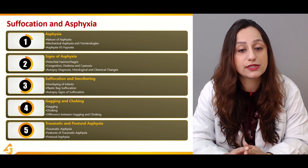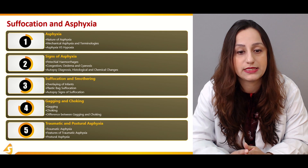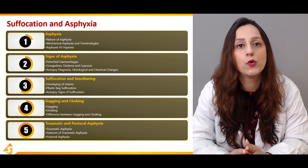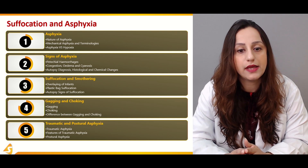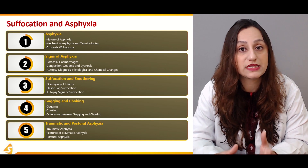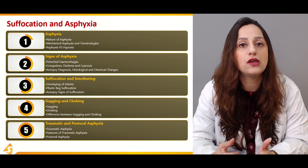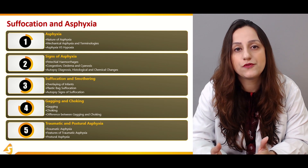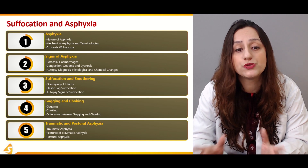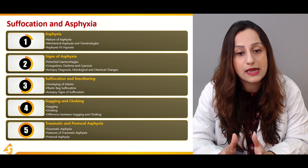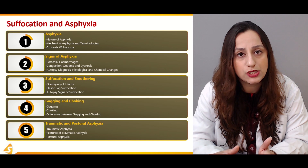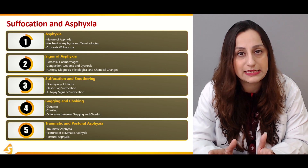Moving on to the fifth section, we'll be dealing with traumatic and postural asphyxia. Traumatic asphyxia is one of the very common homicidal deaths observed. The features of traumatic asphyxial deaths are very important autopsy findings for a forensic expert. Postural asphyxia is another commonly used term also discussed in this final section.